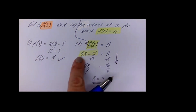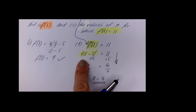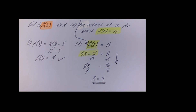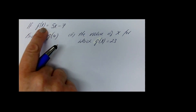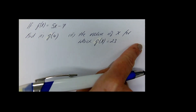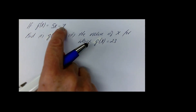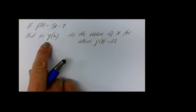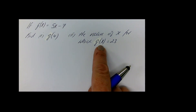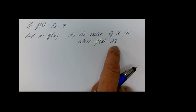If you want a recap on solving equations, there is a video on that. Now try this question: the function g of x is equal to 5x minus 7. Find g of 4, and find the value of x for which g of x is equal to 23. Pause the video and see how you get on.